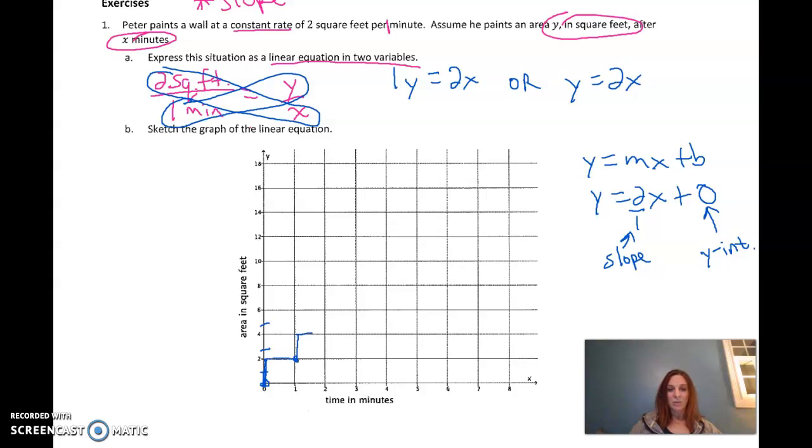Rise 2, which is 1 block, run 1. Rise 2, run 1. We can keep doing it over and over and over. But instead of doing that, we can draw a line through it.